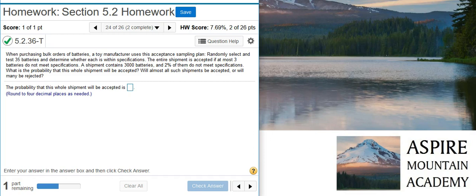Today, we're going to learn how to use a binomial distribution to evaluate toy manufacturing quality control. Here's our problem statement. When purchasing bulk orders of batteries, a toy manufacturer uses this acceptance sampling plan. Randomly select and test 35 batteries and determine whether each is within specifications. The entire shipment is accepted if at most 3 batteries do not meet specifications.